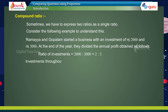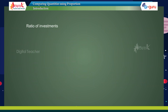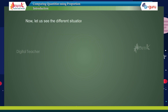The investments throughout the year give: ratio of their shares equals 24 is to 36, which equals 2 is to 3. Ratio of time period equals 1 is to 1, that is 1 year. The ratio of investments equals the ratio of shares when the time period is the same. So they will divide the profit in the ratio of their shares, which is 2 is to 3.